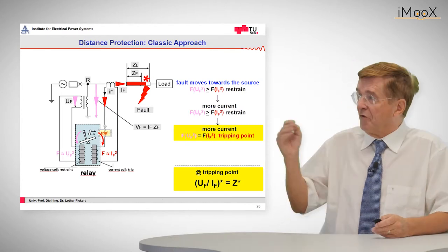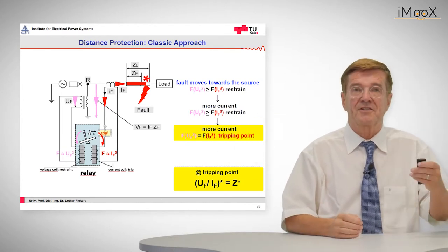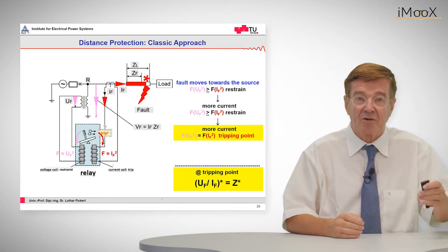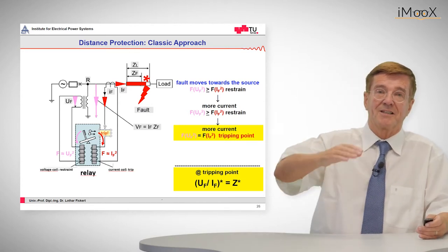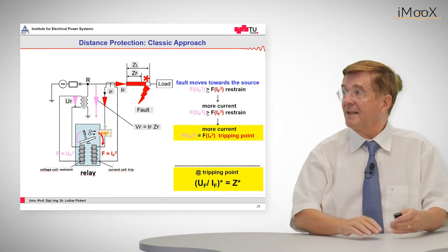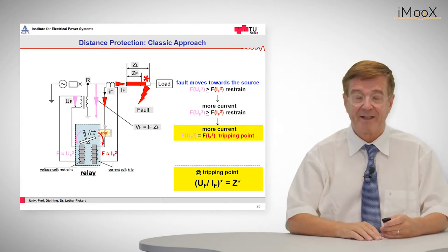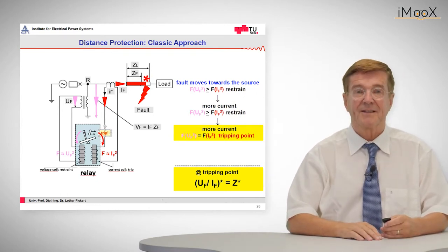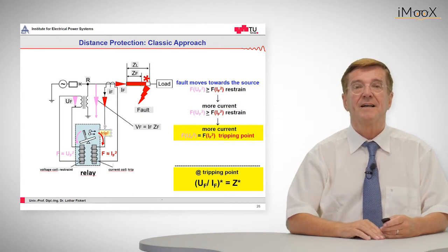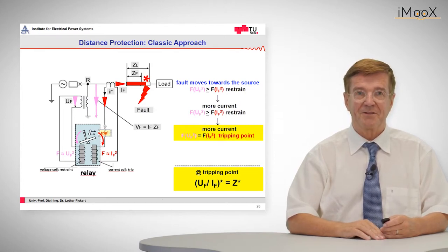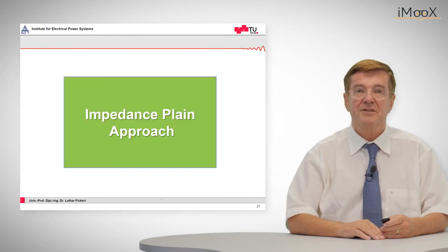And if the fault moves in further, then the residual voltage, the restraining force, gets even lower and the currents will get up. So in this red area we have a trip area and this is the tripping area and by this means such a relay can discriminate between the trip zone and the restraint zone.